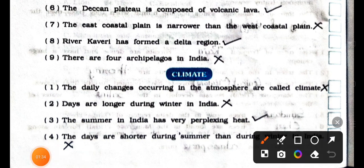Climate, number 1: the daily changes occurring in the atmosphere are called climate. It's wrong. False. Number 2: days are longer during winter in India. Wrong. False.